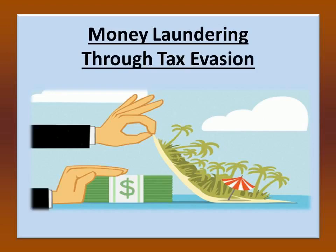Let us understand money laundering through tax evasion. Tax evasion is using illegal means to avoid paying taxes. Typically, tax evasion schemes involve an individual or corporation misrepresenting their income to the tax authorities. Misrepresentation may take the form of underreporting income, inflating deductions, or hiding money and its interest altogether in offshore accounts.